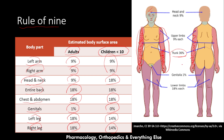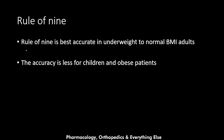For example, if a patient had their entire right leg burned on both sides, their entire right arm burned on both sides, and one side of their left arm burned, you calculate 18 plus 9 equals 27 percent, plus 2.25 percent, giving 29 percent total body surface area affected. The rule of nine is most accurate for underweight to normal BMI adults, for which it was originally developed, and its accuracy is less reliable for children and obese patients.